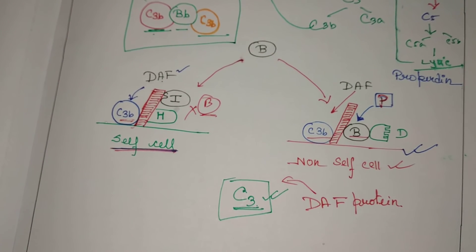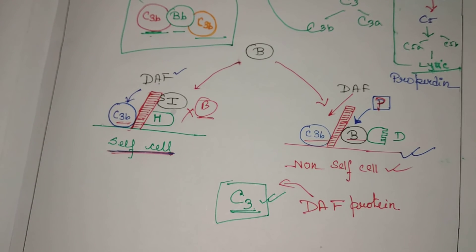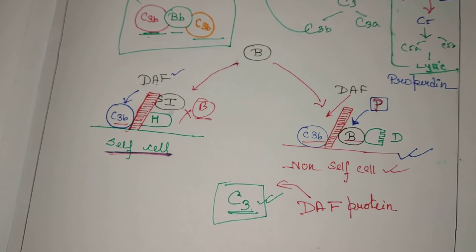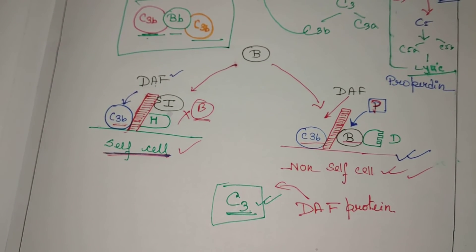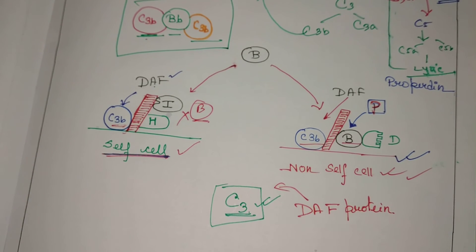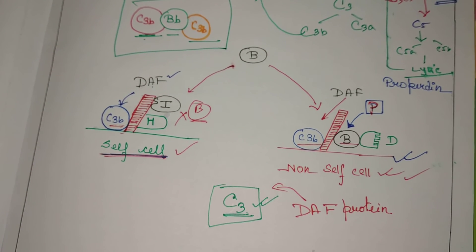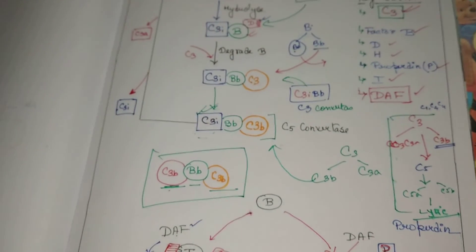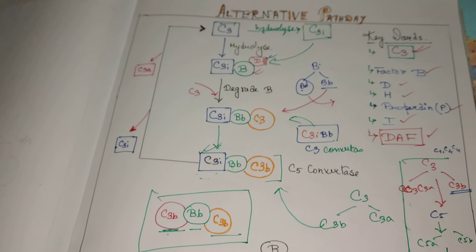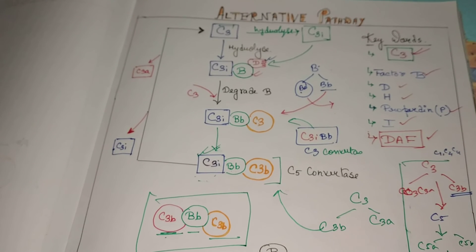In this whole video, we saw how this pathway distinguishes self from non-self cells, how the C5 convertase is formed with the help of C3i, and how C3i is hydrolyzed or detached from the complex. If you have any questions, ask in the comment section. If you like the video, please like, comment, share, and subscribe.